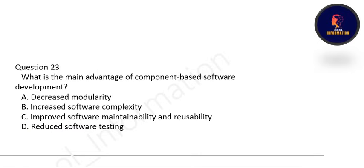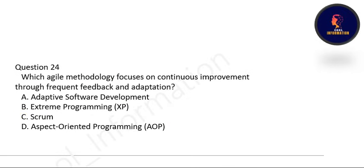Next: what is the main advantage of component-based software development? Options include decreased modularity, increased software complexity, improved software modularity and reusability, or reduced software testing. Correct option is C — improved software modularity and reusability. Next: which agile methodology focuses on continuous improvement through frequent feedback and adoption? Correct option is A — Adaptive Software Development.